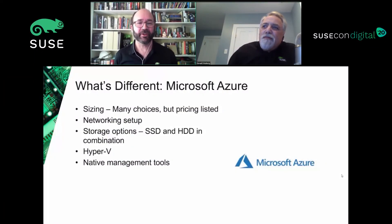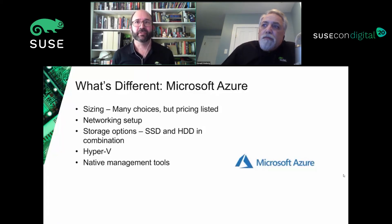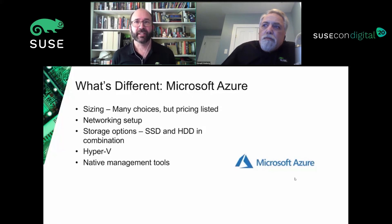Now let's talk about what's different in Azure. Unlike Amazon, Azure lists prices when you select your instance size, so you can get a good idea of cost upfront. Networking setup is a little different from Amazon — make sure you're setting up your network security groups properly. Azure also gives you options for solid state and spinning disks: premium SSD, standard SSD, and standard spinning disks, so you'll want to pick the right kind for the performance you need.